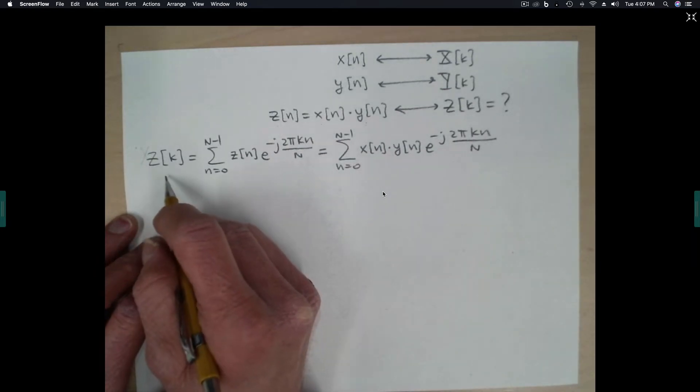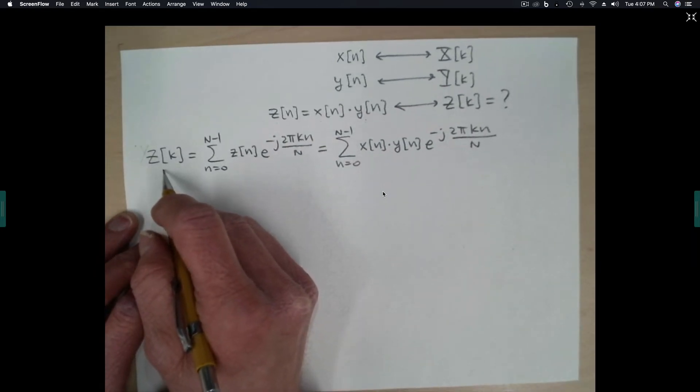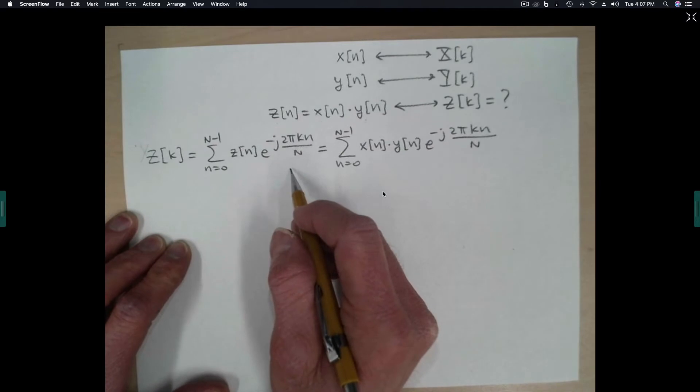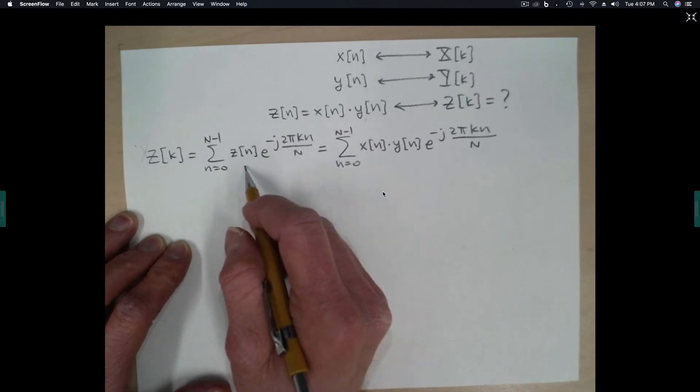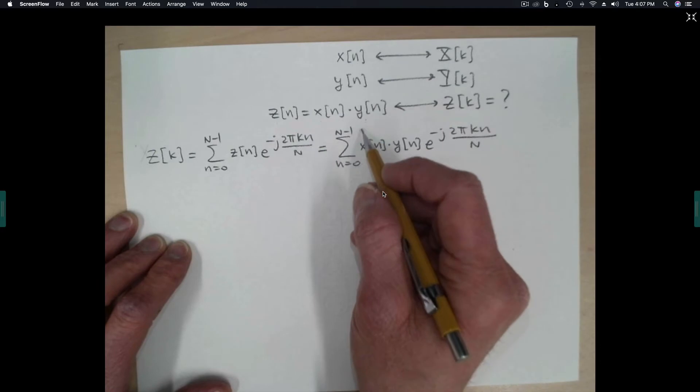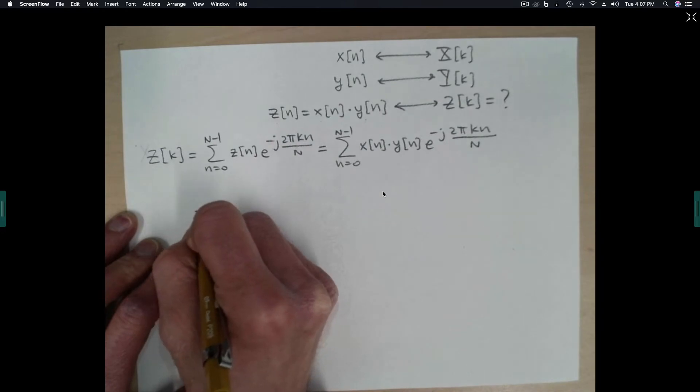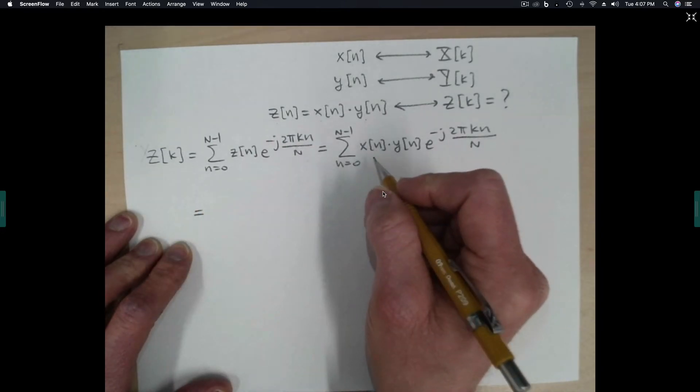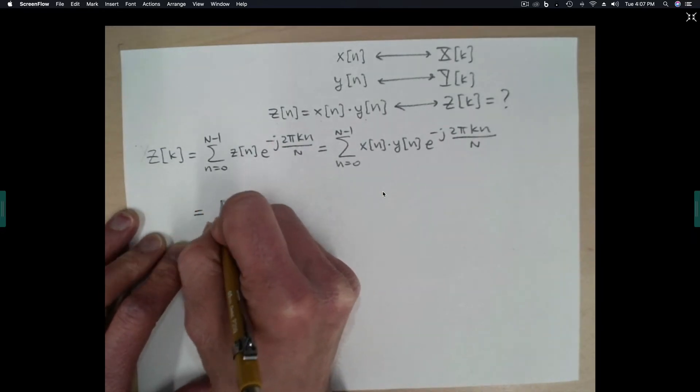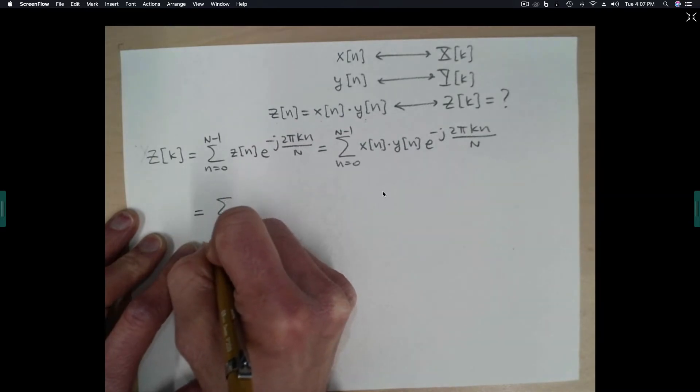I've gone ahead and taken the first few steps. I've written down the definition of the DFT of z(n), and I've also substituted x times y in for the time sequence z(n). The next step is to replace one of these, it doesn't matter which one, with its inverse transform of its corresponding DFT.